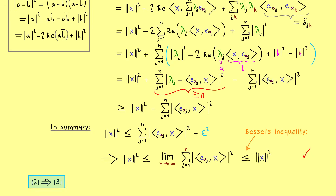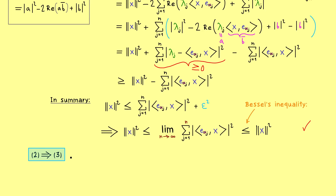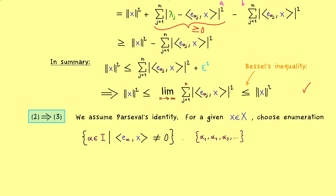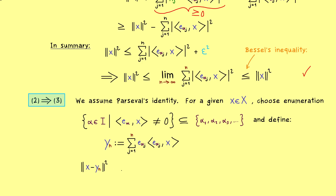So let's start with the next implication, going from the second statement to the third. We now assume Parseval's identity and want to show the existence of the limit. We can still fix a given vector x in X and choose a proper enumeration of our indices. Then we define the finite linear combination y_n — the vectors e_{alpha_j} scaled with these inner products — and we want to calculate the limit.